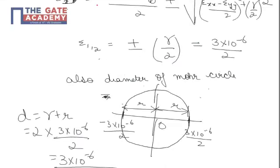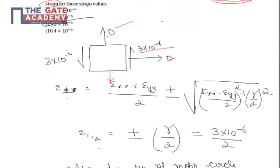Now if we talk about the principal strains, they are given by epsilon xx plus epsilon yy by 2 plus minus epsilon xx minus epsilon yy by 2 square plus gamma by 2 square.